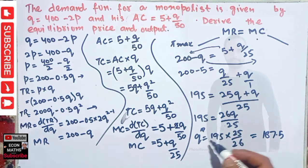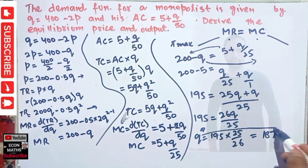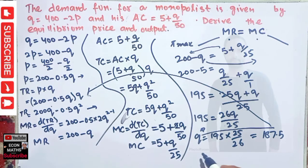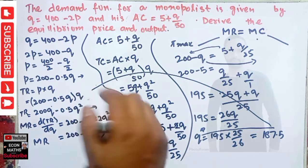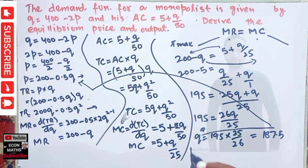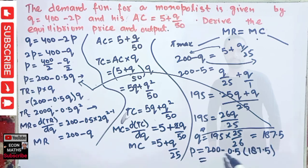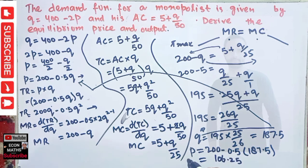To find the equilibrium price, we substitute Q = 187.5 into the inverse demand function: P = 200 − 0.5 × 187.5 = 200 − 93.75 = 106.25. So the equilibrium price is P = 106.25.